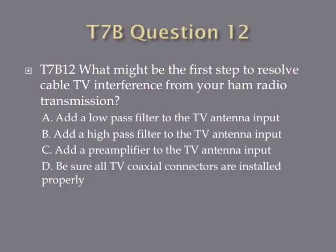Question 12. What might be the first step to resolve cable TV interference from your ham radio transmission? A. Add a low-pass filter to the TV antenna input. B. Add a high-pass filter to the TV antenna input. C. Add a pre-amplifier to the TV antenna input. Or D. Be sure all TV coaxial connectors are installed properly.